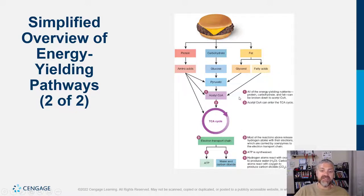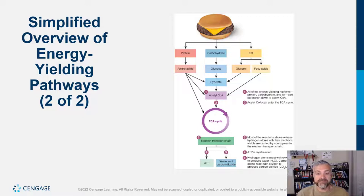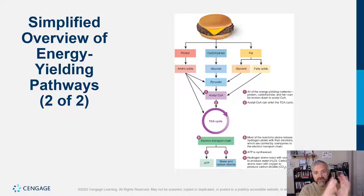Step one: all energy-yielding nutrients — protein, carbs, and fat — can be broken down to acetyl-CoA; that's why I call it the keystone. Acetyl-CoA then enters the Krebs citric acid cycle, where you generate hydrogens and electrons, which enter the electron transport chain. Most reactions release hydrogen atoms with their electrons, carried by coenzymes NADH and FADH2, to the electron transport chain. Step four: ATP is synthesized. Step five — waste products: hydrogen atoms react with oxygen to produce water, and carbon atoms react with oxygen to produce carbon dioxide. That's the overview of how you generate energy.